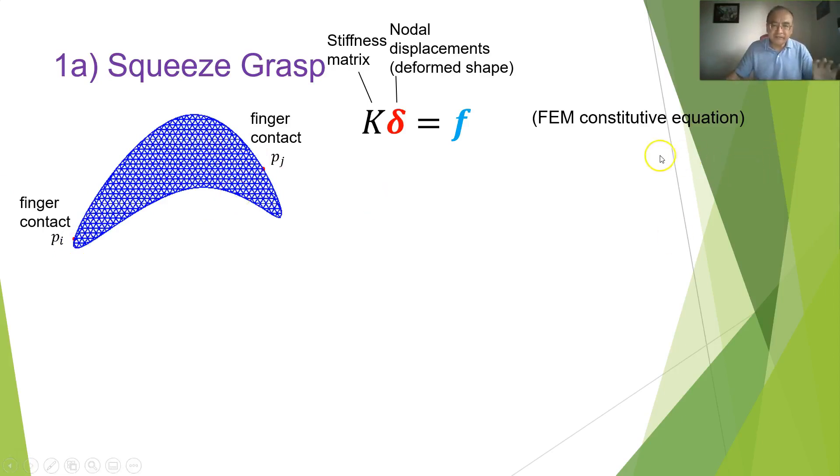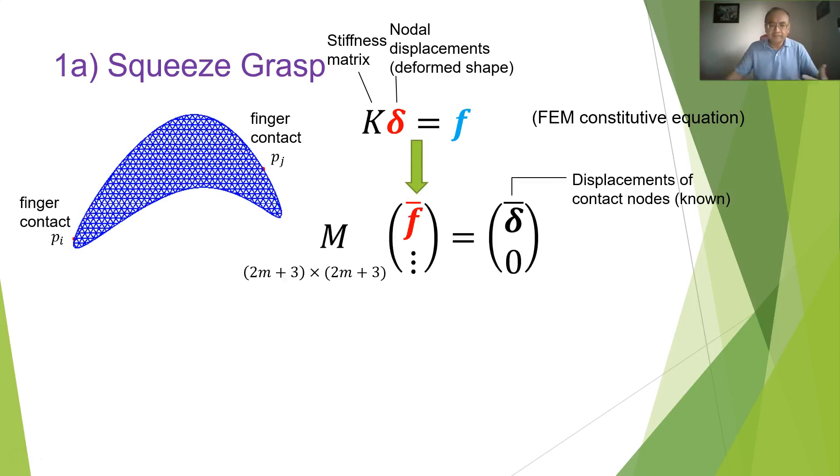So the finite element method gives us constitutive equation here. This delta represents all the nodal displacements, which essentially corresponds to the deformed shape. And then F represents the forces exerted by the fingers. We can transform the equation, such that on the right hand side, we have only the displacements of contact nodes. These are essentially the quantities to be controlled, so they are known, and we can compute the forces at the finger contacts. From that, the constitutive equation essentially gets reduced to this form. And this is a reduced constitutive equation.